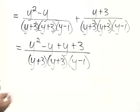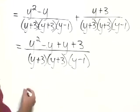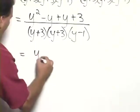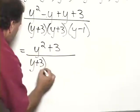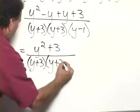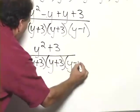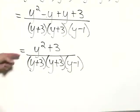And then we can combine the like terms, negative y plus y, they sum to 0. So, we have y squared plus 3 over y plus 3 times y plus 3 times y minus 1. And that is as simplified as it can be.